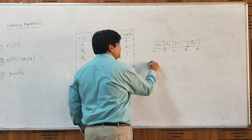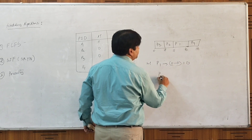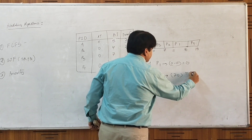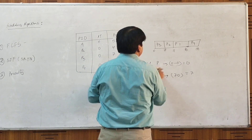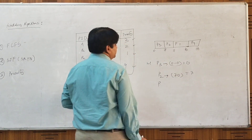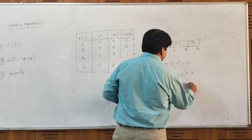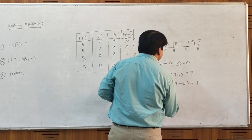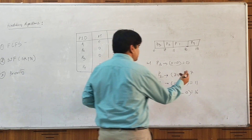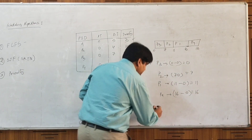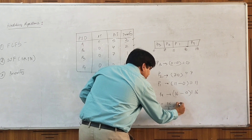Calculating the waiting times for different processes: P3 waited 0 seconds (scheduled first). P2 waited 7 seconds. P1 waited 11 seconds. P4 waited 16 seconds. The total waiting time is 0 + 7 + 11 + 16 = 34. The average waiting time is 34 divided by 4, which comes out to be 8.5 seconds.